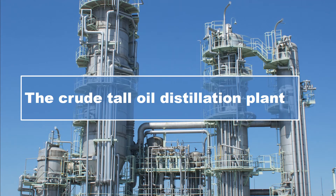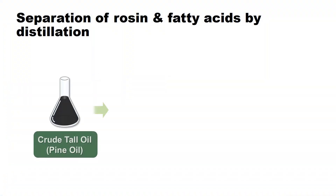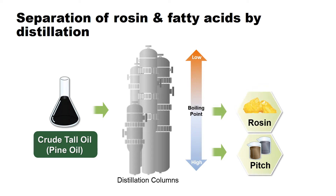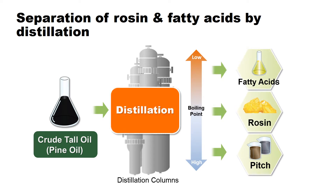We would now like to show you how rosin, fatty acids and other materials are separated at the tall oil distillation plant. In order to separate rosin, fatty acids and other materials from crude tall oil, it is necessary to distill it carefully and continuously because each component has a similar range of boiling points. The separation mechanism is outlined in the following flow chart.